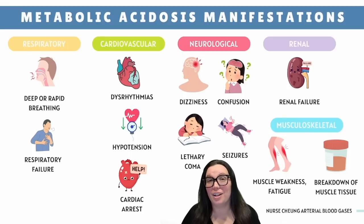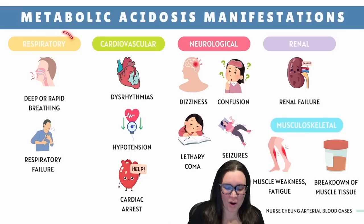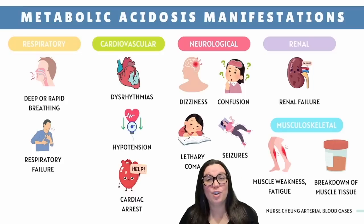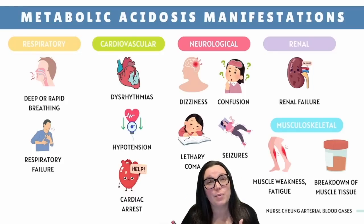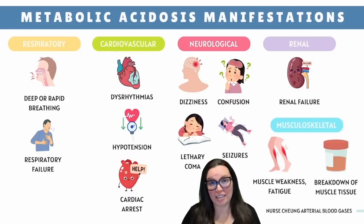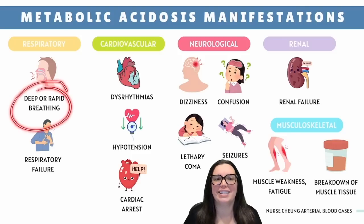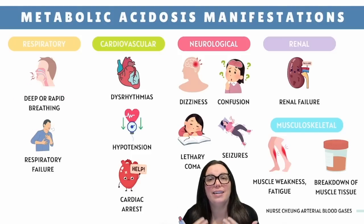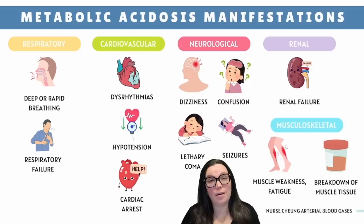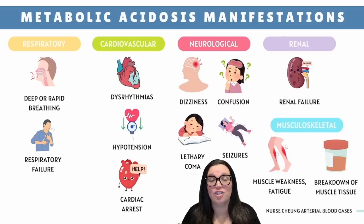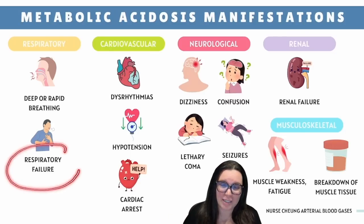So let's talk about how metabolic acidosis throws the entire body into chaos. First, the respiratory system: your lungs immediately try to fix this mess, because breathing is the fastest way to alter our pH. Hyperventilation kicks in — the body's desperate way of trying to blow off all that excess CO2. However, if we don't fix the underlying problem, all this hyperventilation can eventually give out, leading to respiratory failure.